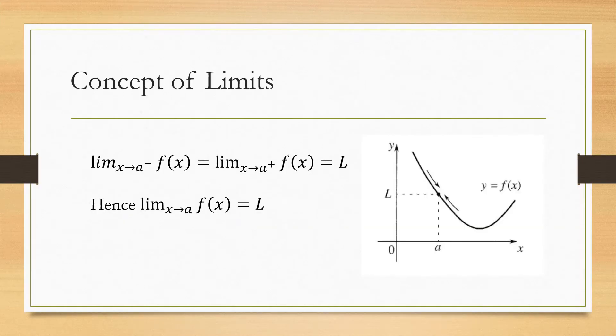Before starting on continuity and discontinuity, let's recap the concept of limits. In the previous lecture you would have learned what is the limit of a function. Limit x tends to a-minus of f(x) is equal to limit x tends to a-plus of f(x), which is equal to capital N. Just observe the figure on the right — there is a curve y = f(x) and the intersection point will be exactly at the limit, so limit x tends to a of f(x) equals N.